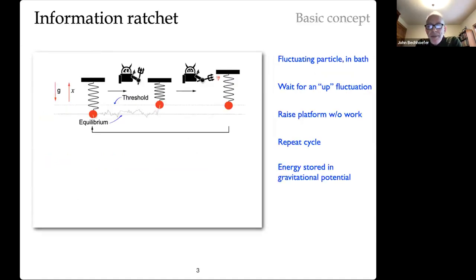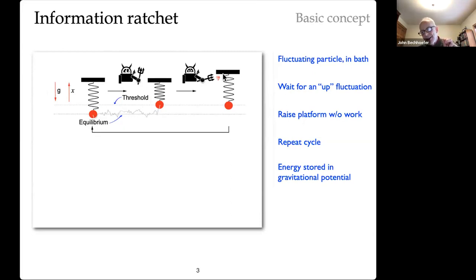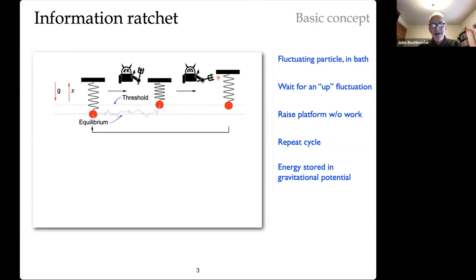To set the stage, imagine you have a heavy mass hanging from the ceiling by a spring. It's small and Brownian, so it's fluctuating up and down. You have a demon that watches it, and when it hits a threshold where the spring is compressed a certain amount, the demon quickly raises the ceiling up by just the right amount, not to do any work on the particle. But now the equilibrium position is shifted up. If you could repeat this cycle, you're basically raising a heavy weight without apparently doing any work. Of course, there are computation and information processing costs, but from the point of view of the system itself, you're raising a heavy weight without doing any work locally, just powered by fluctuations.